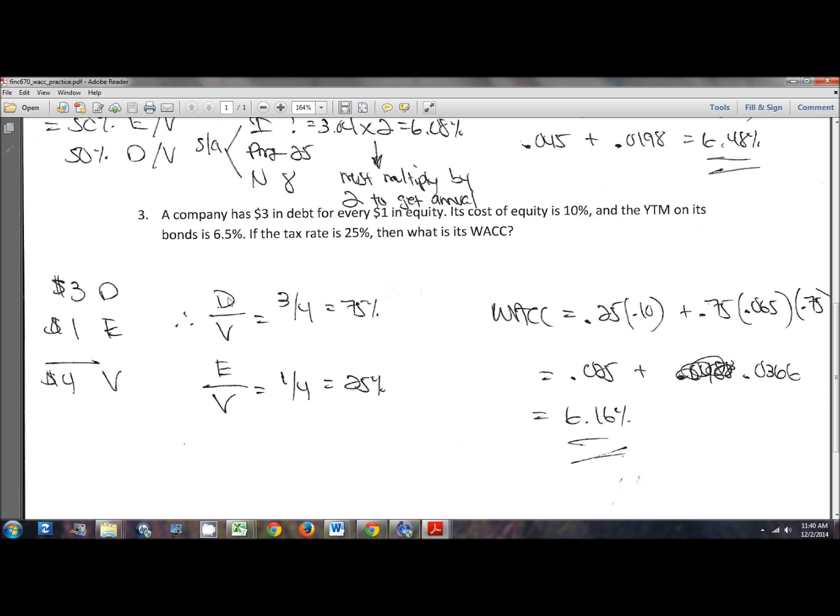So then to find my weights, once I have V in place, it's not that bad, right? It's just D over V. This is going to be my weight of debt in my capital structure. And then E over V is my weight of equity in my capital structure.